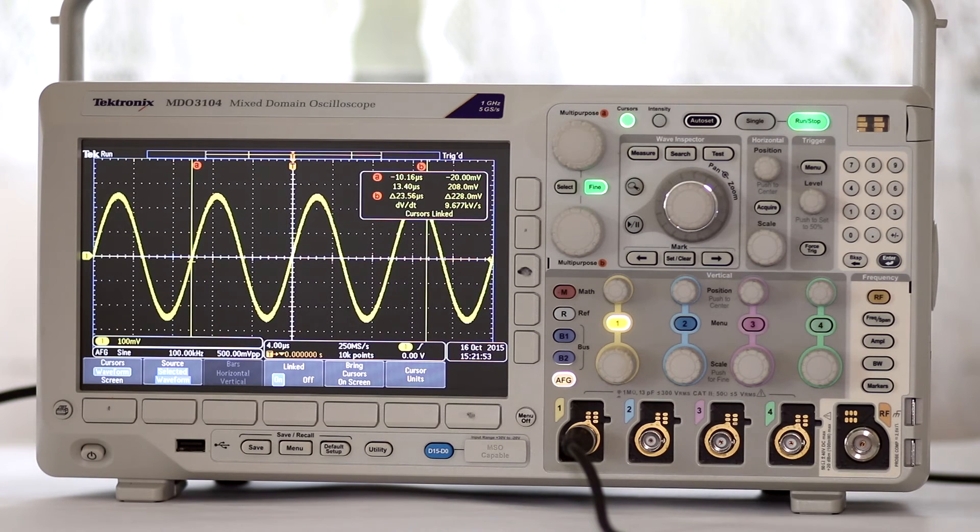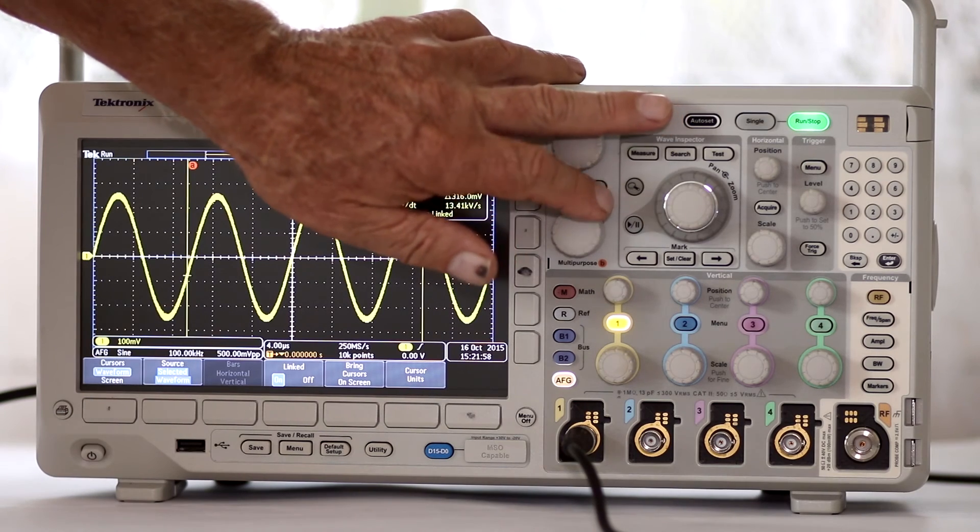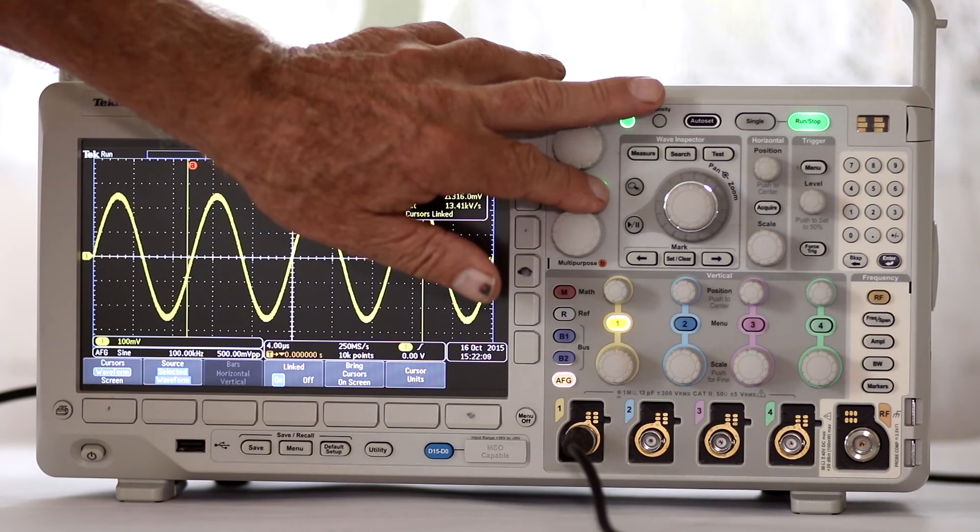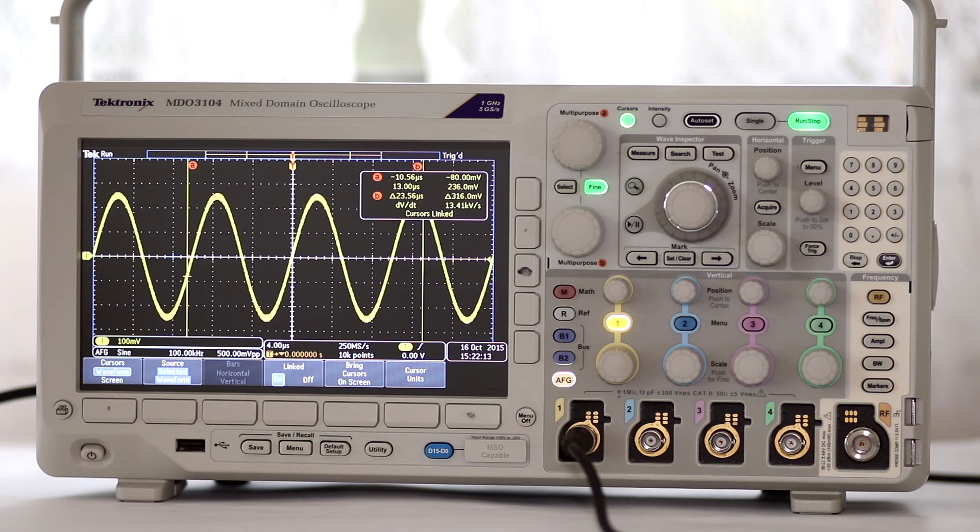To the right of the select button is the fine button. Pressing it repeatedly toggles between fine and coarse, which relates to the sensitivity of multipurpose knobs A and B. When you have a long distance to go, coarse enables the adjustments to be made more quickly. But when working with cursors, fine is usually the way to go.